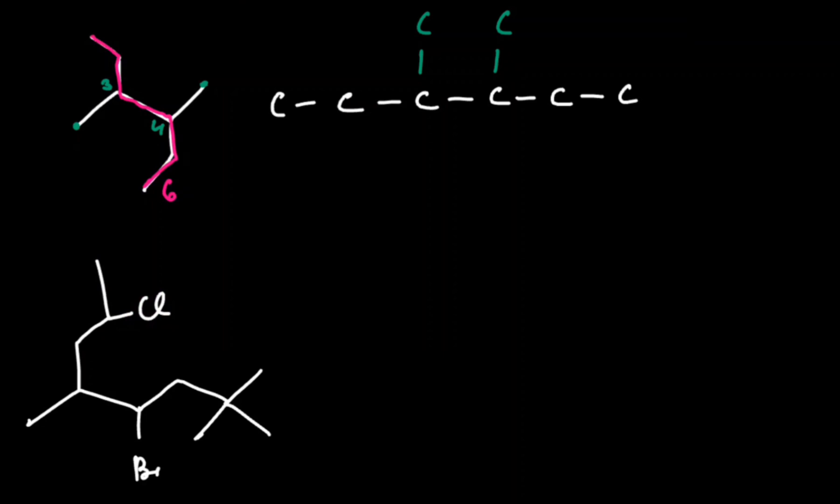Next, we add hydrogen atoms. Remember that carbon always forms four bonds. The first carbon has only one bond so far, so we add three hydrogen atoms.